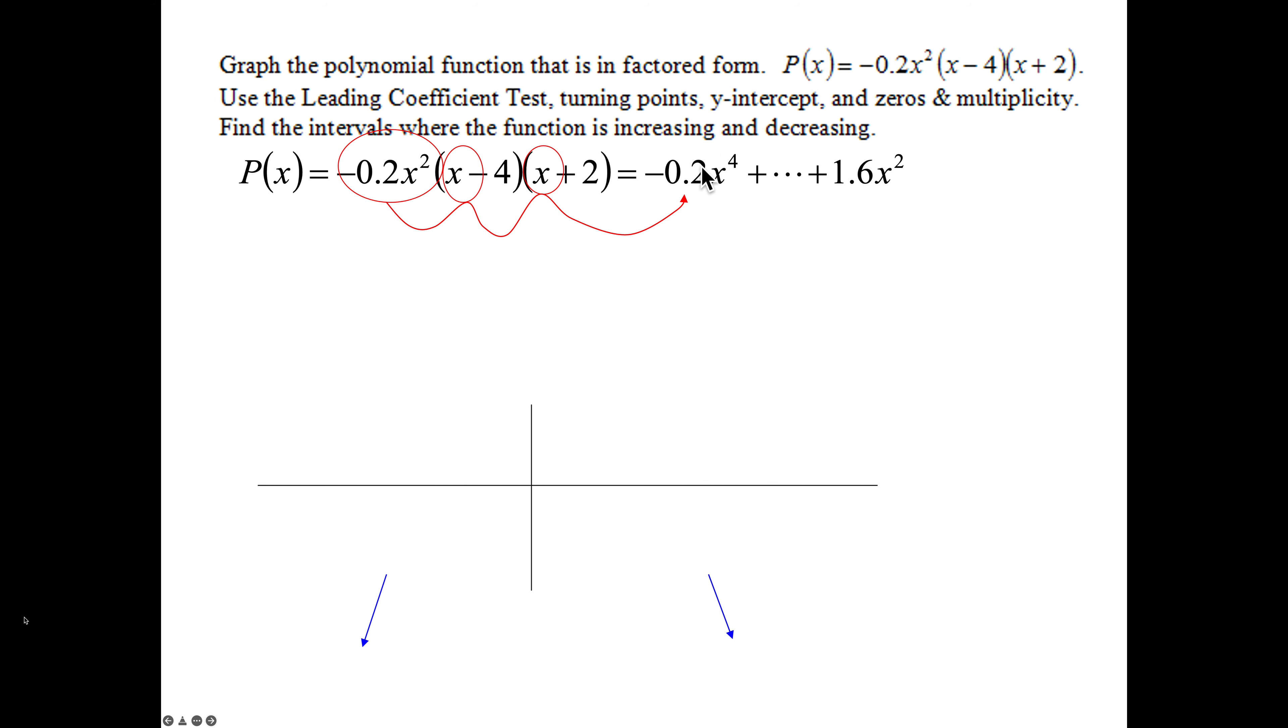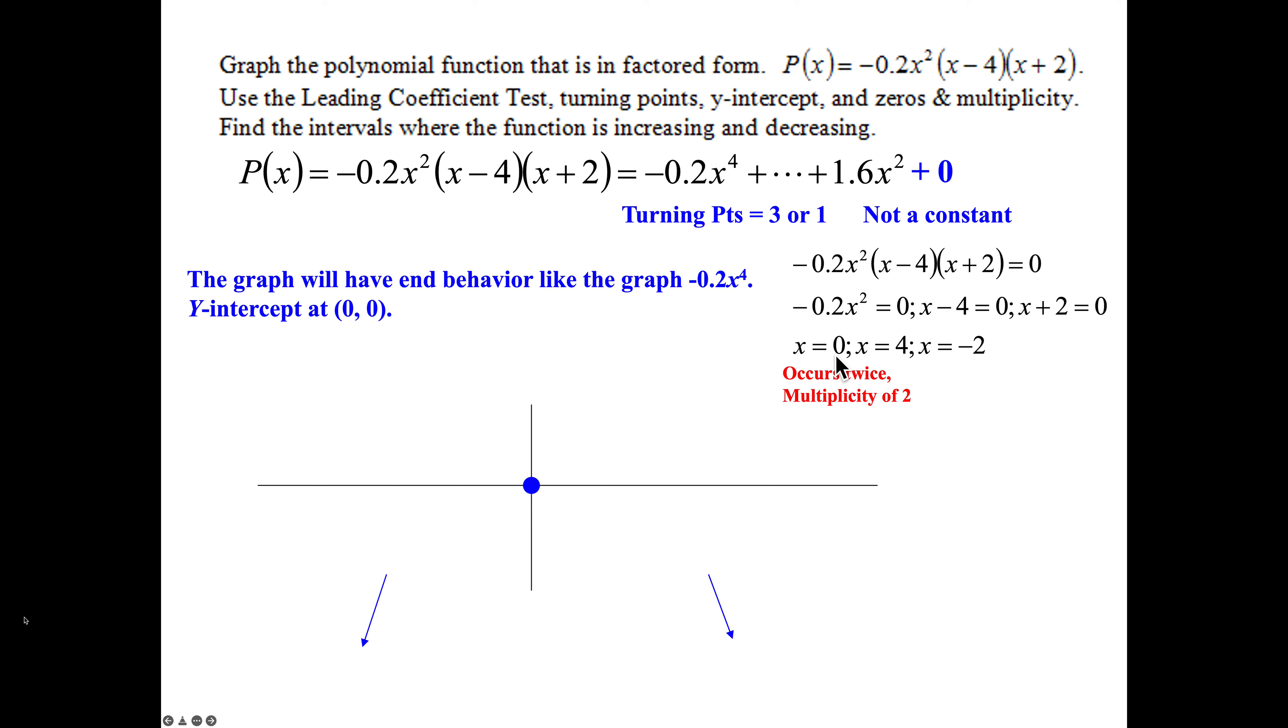So my leading term has a 4 for a power, a negative leading coefficient. So even power, negative a value, both left and right hand behavior go down. Y-intercept, well, I really don't have a constant here unless you want to consider putting a 0 out there. And that's where my y-intercept will be. That's also going to be an x-intercept, which is generated from that GCF factor right there. But having a power of 4 means my turning points will be 3 or 1. And find your x-intercepts, the point, our negative 0.2x², that's going to give you a 0, which again occurs twice.